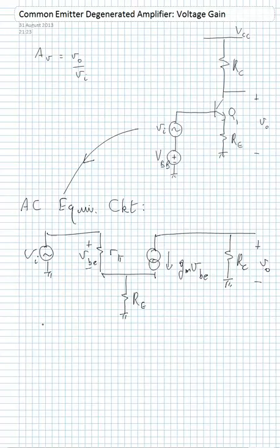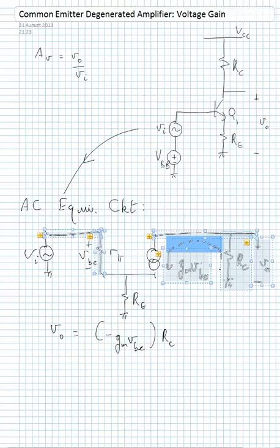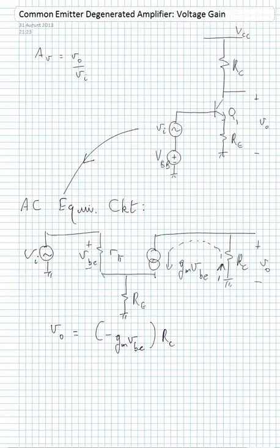The first step to derive our expression is to write down an expression for the output voltage. By Ohm's law, that's the current flowing through RC multiplied by RC. This current is actually negative because it flows into the negative terminal of RC, so we end up with this expression with a negative sign. We'll denote this as expression 1.